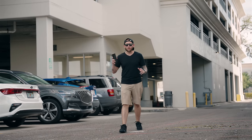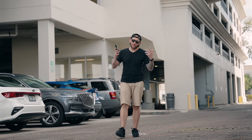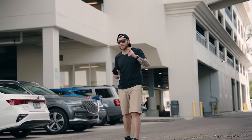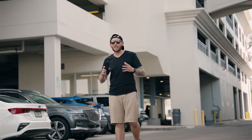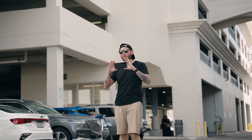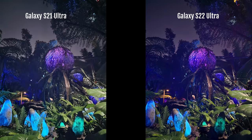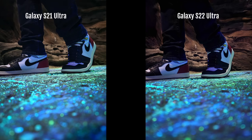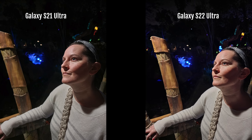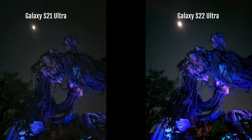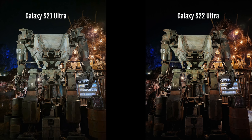Night mode has also been improved on the S22 Ultra compared to the S21 Ultra — you get a one-second exposure improvement, meaning less time you have to hold the phone steady, giving you a sharper photo. Here are a couple of examples between the S21 Ultra versus the S22 Ultra. I really appreciate that one-second improvement, but I think the optimization needs to be fine-tuned a little bit more.